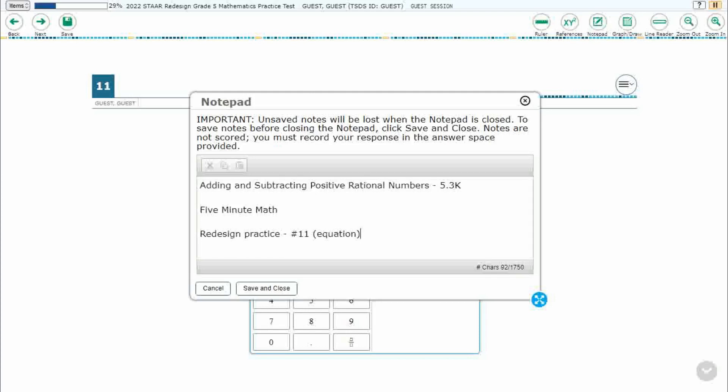This is standard 5.3k in the great state of Texas, and we are using item number 11, which is a new item type called equation, off the Redesign Practice Online Star Test.